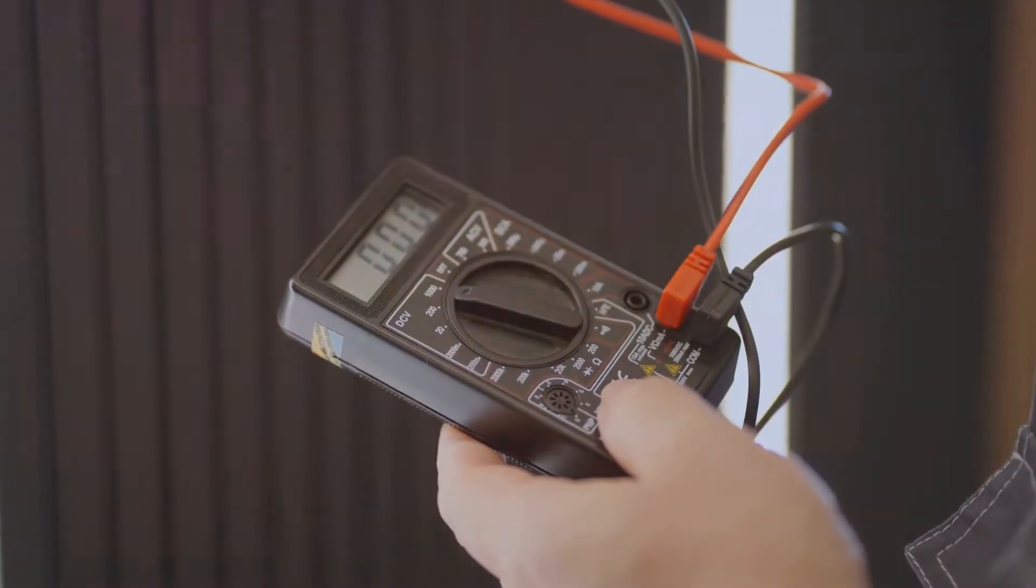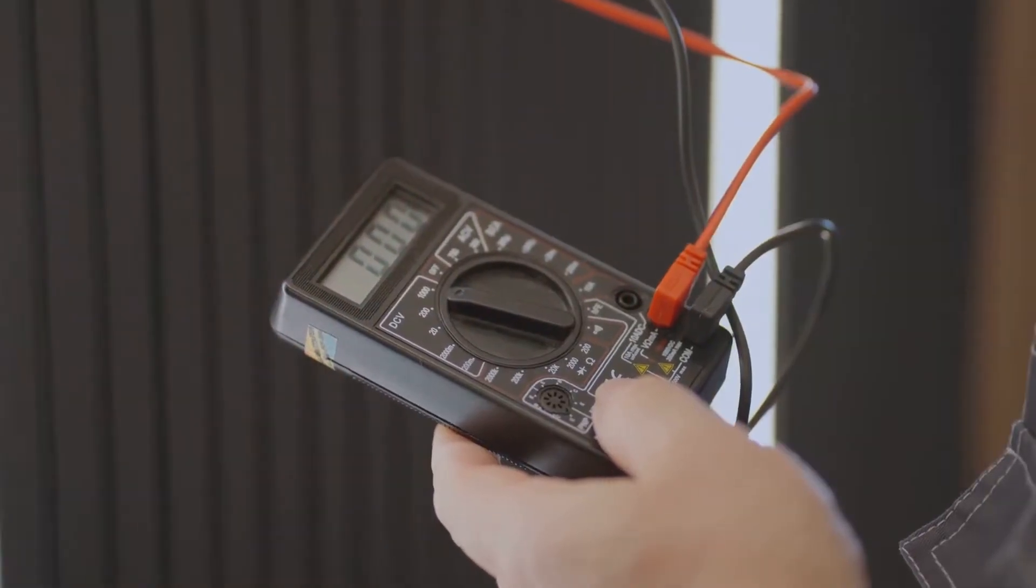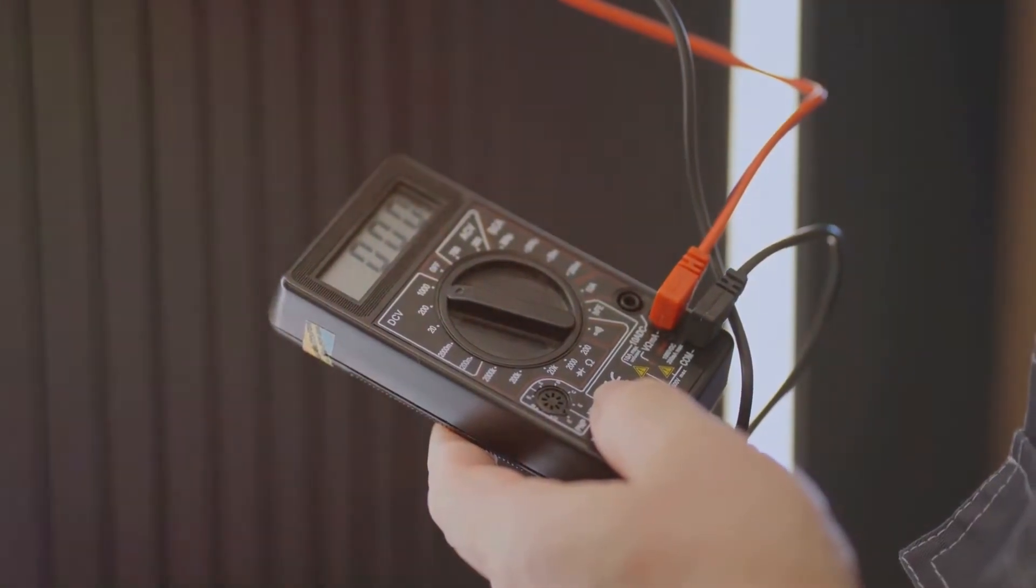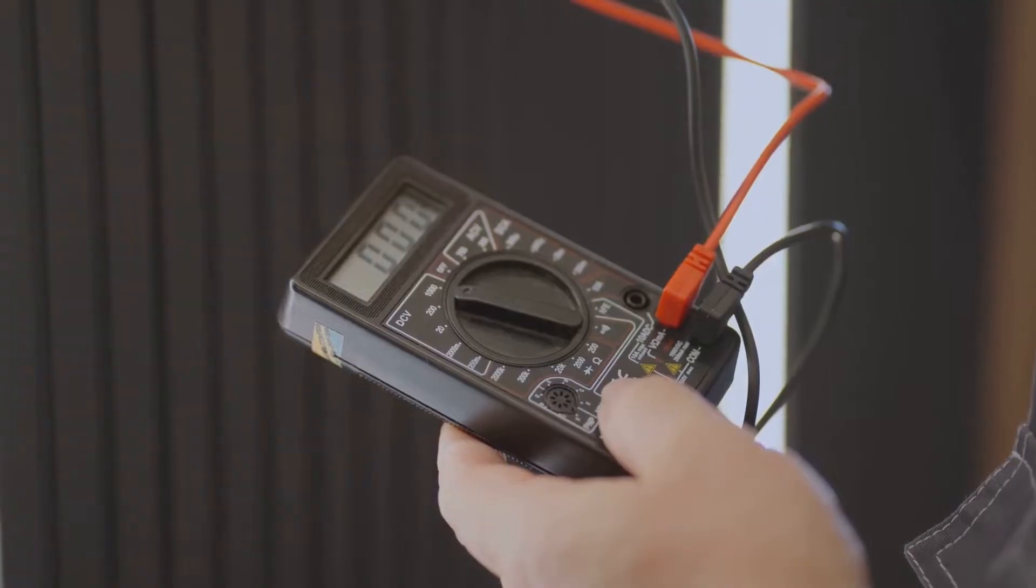Analog multimeters have a needle that moves across a scale. Digital multimeters have a digital display which is easier to read. Either one will work for this job.